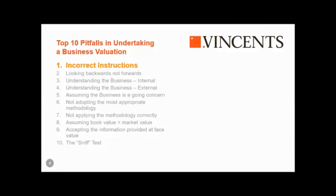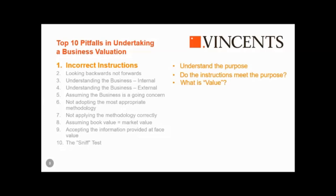Peter and I have picked 10 things that go wrong. There's more — these are the more common ones. The first one is incorrect instructions. From our point of view, to do the best we can, we need to understand what the purpose of the valuation is. In a matrimonial matter, it's fairly obvious what the purpose is, but there may be underlying things that only come out during the actual valuation.